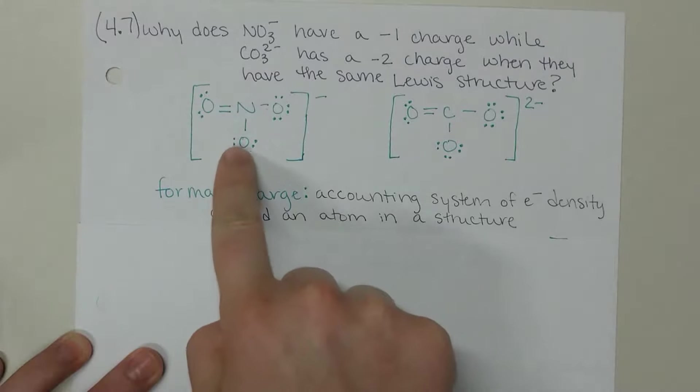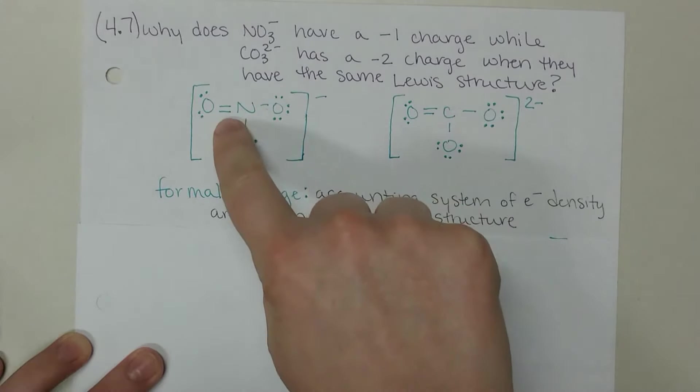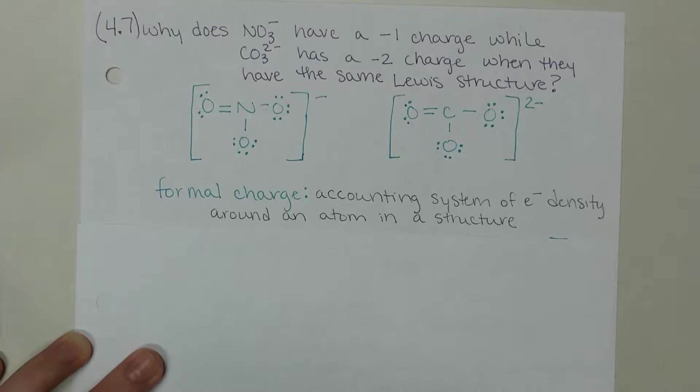These oxygens with the lone pairs - those lone pairs are on that atom itself, it's not sharing them at all. The two electrons per line are being shared.